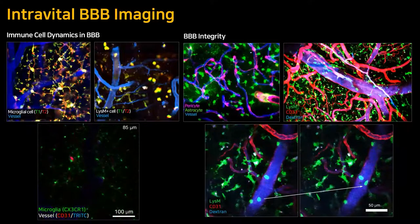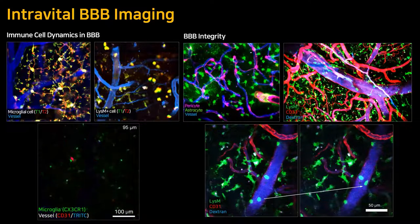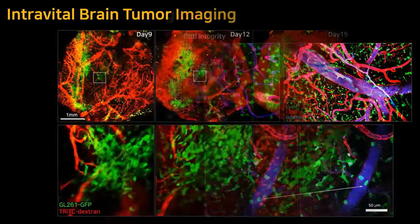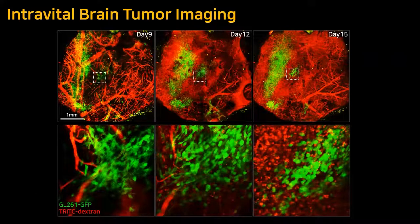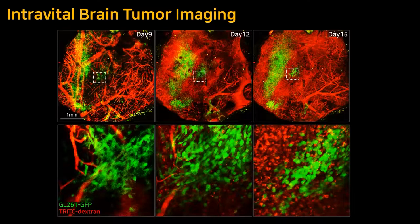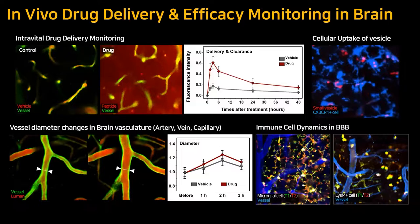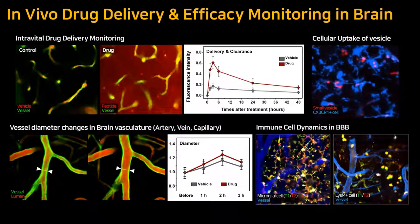Intravital BBB integrity can be analyzed in various ways, investigating immune cell dynamics such as microglial cell and leukocyte movement over time, and visualizing astrocytes, pericytes, and vascular structures in the cerebrovascular cortex. Applying to the brain tumor model, we implanted glioma cells in the brain and monitored the development and cell dynamics of glioma tumor cells along with vascular networks over time. Intravital brain imaging techniques can also be applied to therapeutic research investigating drug delivery to target brain tissue, drug efficacy, and therapeutic mode of action by visualizing immune cell dynamics, cellular uptake, and vascular changes in various preclinical mouse models of human brain disease.